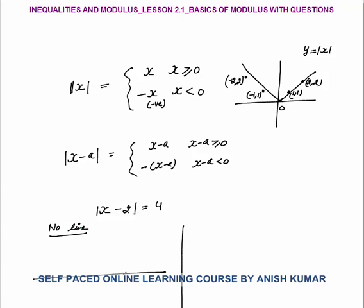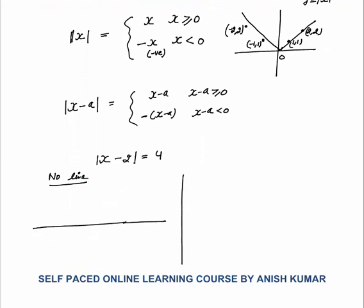For example, |x - 2| = 4. Using the number line method: the distance of any point x from 2 is 4. On the number line, from 2, a distance of 4 gives x = 6 or x = -2, since both points are 4 units from 2. So we get two values: x = -2 and x = 6.